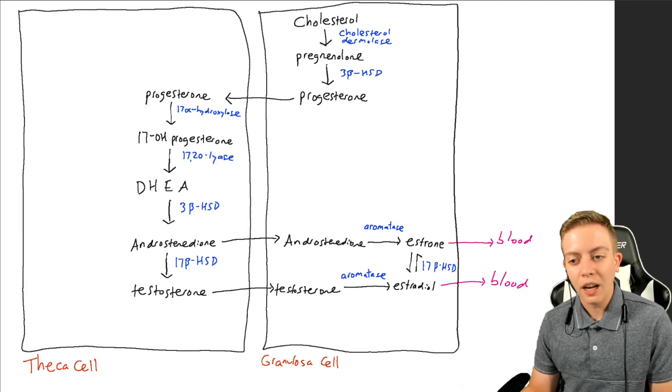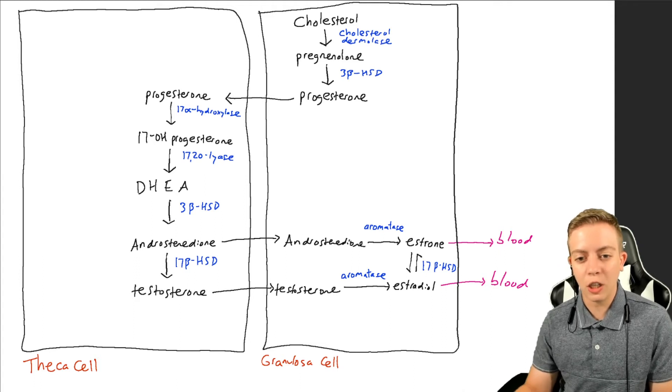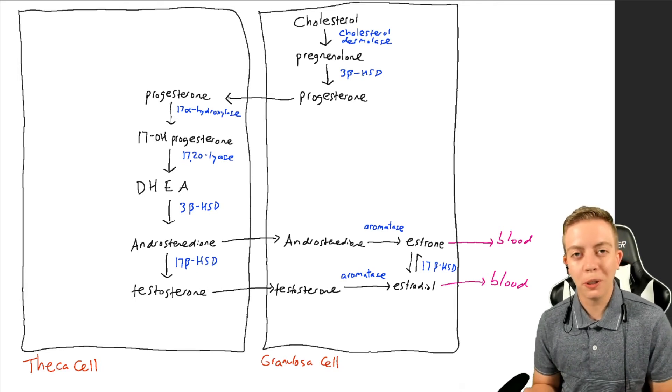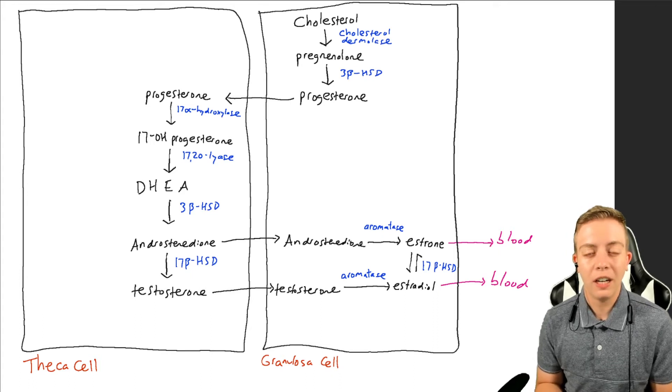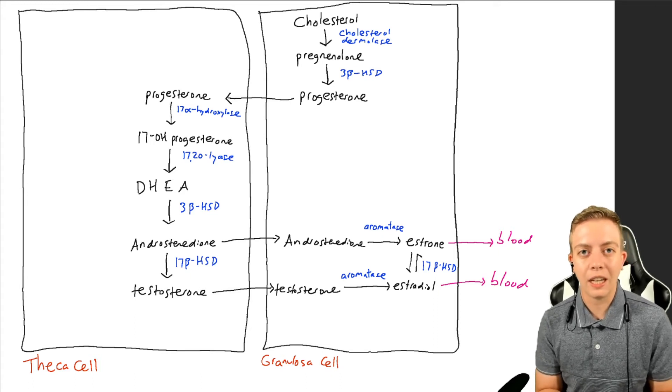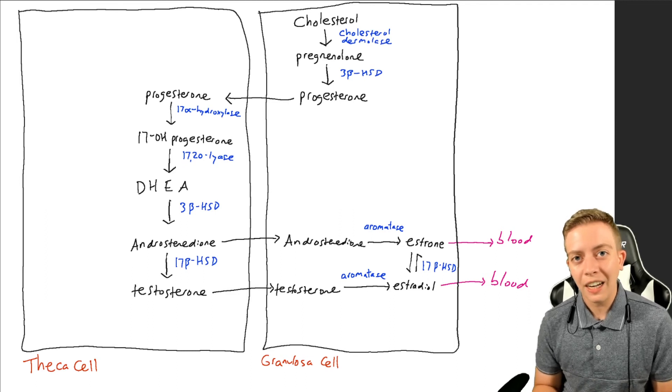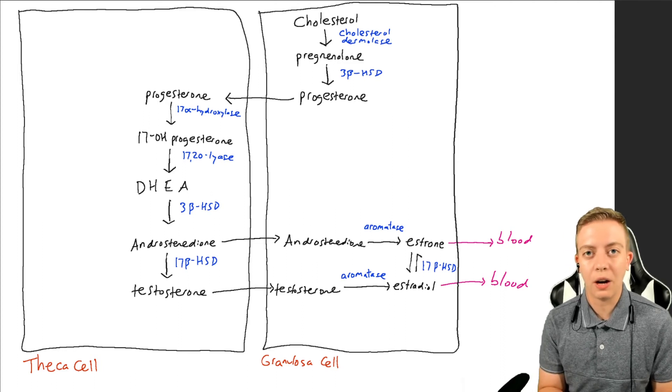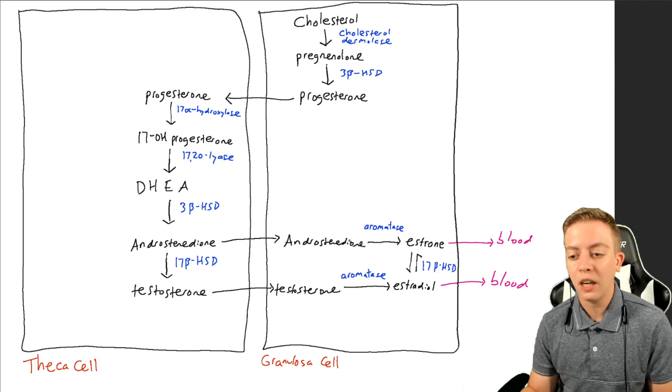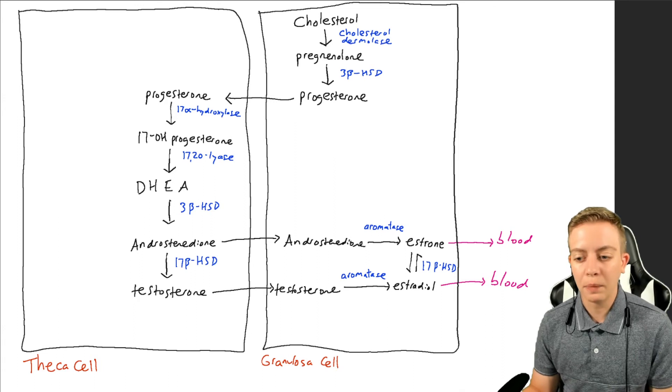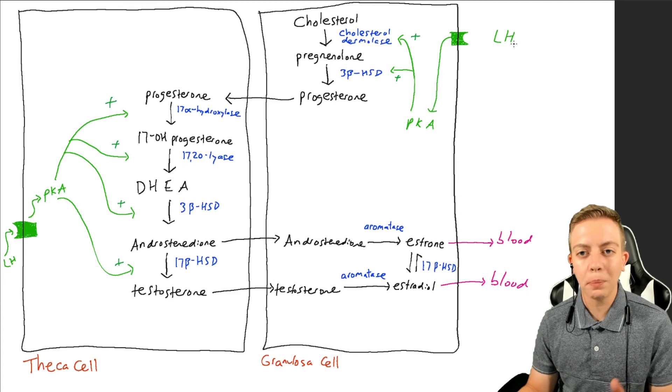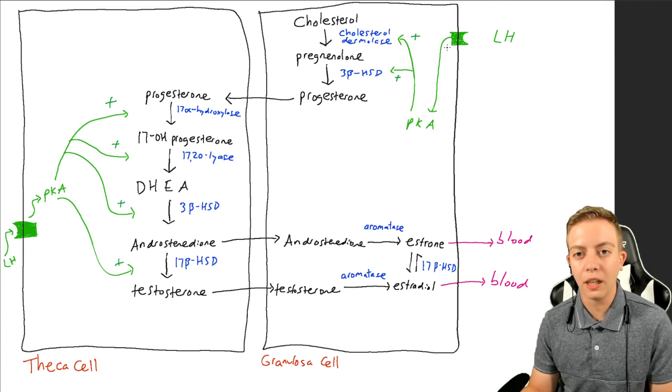be released into the blood to then go act on other tissues that have estrogen receptors. So last time we talked about LH, which is a hormone produced by the pituitary that increases production of testosterone in the theca cells. So now we're going to talk about LH and its counterpart FSH and how they would interact with this pathway now that we have estrogens being produced. As we saw last time, we had LH that bound to the LH receptor, and we have them on both the granulosa cells and the theca cells. As you can see, we